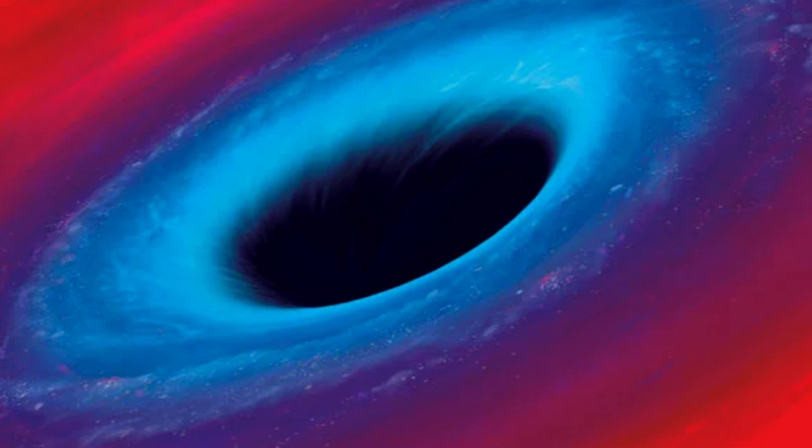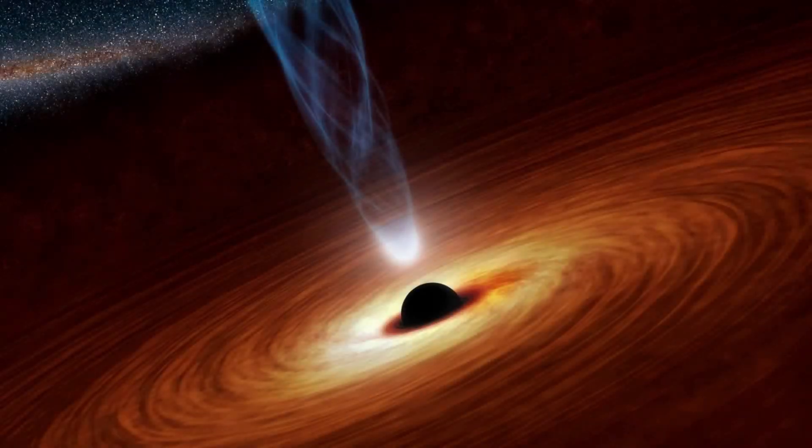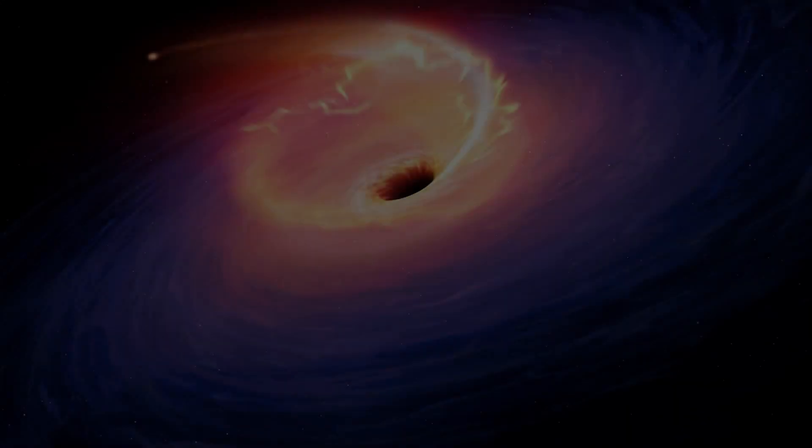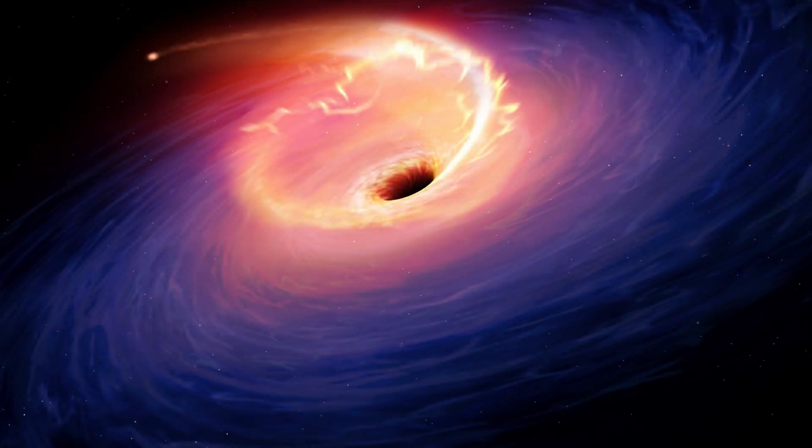Black holes consist of three main components. At the very center lies the singularity, a point where the gravitational field becomes infinitely strong. The event horizon is the boundary surrounding the singularity beyond which nothing can escape, not even light.